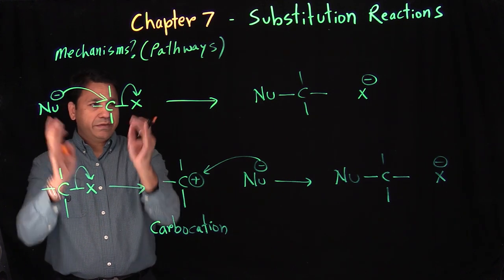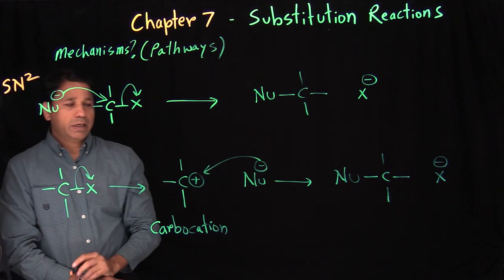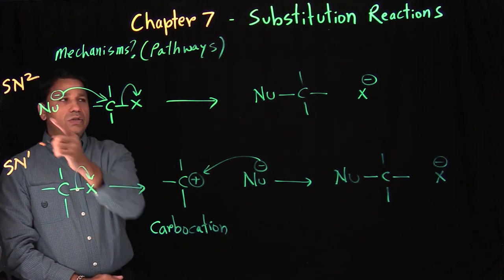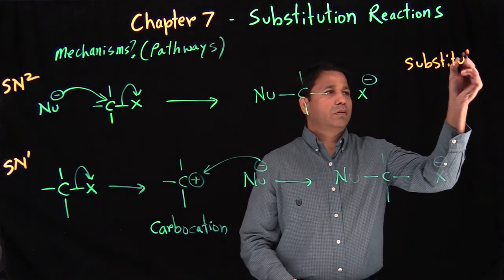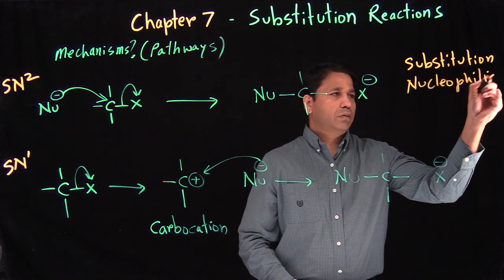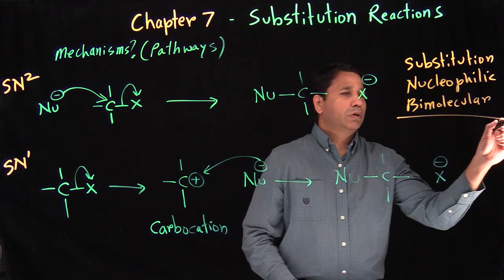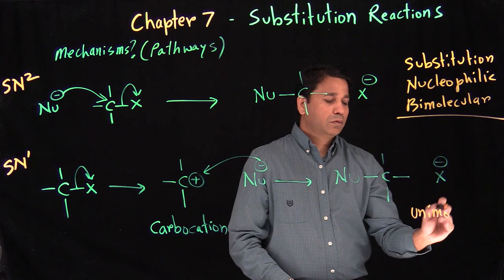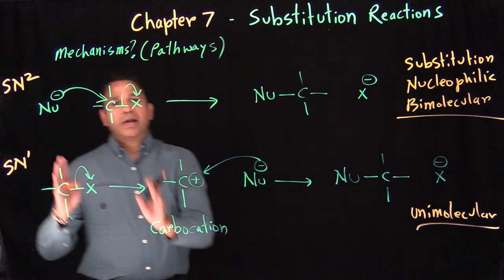When everything happens in one step, that mechanism is called SN2. The two-step mechanism is called SN1. SN2 stands for Substitution Nucleophilic Bimolecular, and SN1 stands for Substitution Nucleophilic Unimolecular.